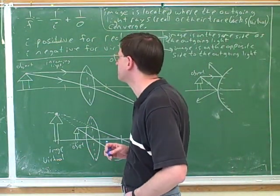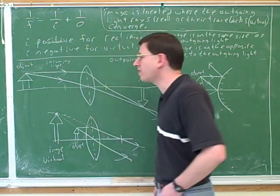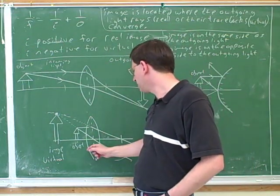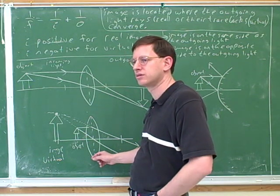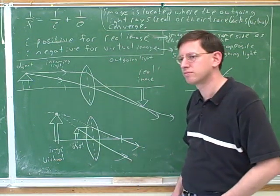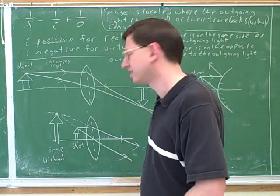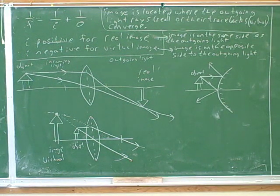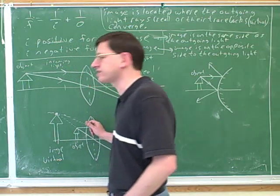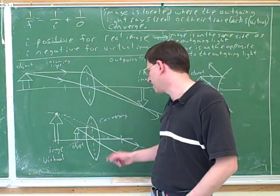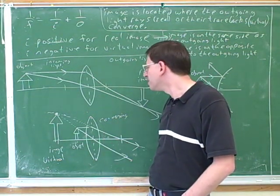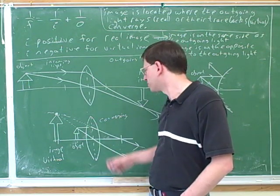That is actually a mistake I see people make a lot: confusing the sign conventions for F and for I. Let's back up — is this a converging or a diverging lens? That's a diverging lens. No, let's take another look at our table. Our table should give us a quick way of deciding whether any lens is converging or diverging. That's converging — yes, definitely converging.